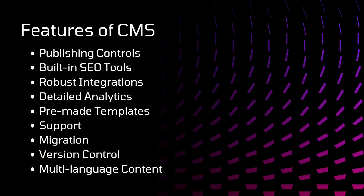Features of CMS. These are some of the features provided in a CMS. Publishing control: whenever a content author wants to publish content to the live site, they will first create the content in draft state, preview that content to see how it will look, and after everything is okay, they will publish that content. This publishing feature is provided in the CMS.